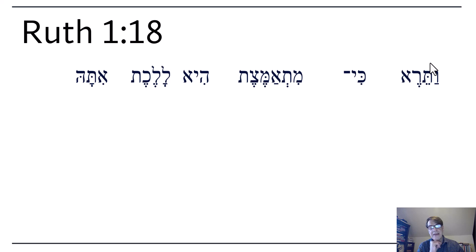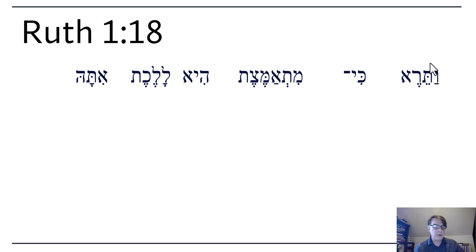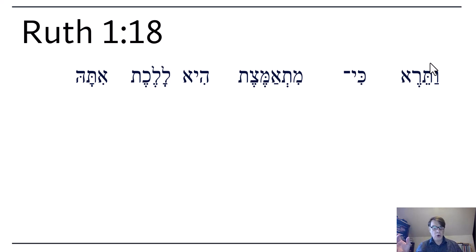I'm guessing it is third feminine singular, and that the subject is probably Naomi. Naomi went down with her husband to Moab; her husband died, her sons got married, and then they died. She's going back to Bethlehem, and Naomi and Orpah go back a little bit, then she says, 'Go home, I'm not going to have any more children, go back and marry in Moab.' Orpah did, but Ruth wouldn't. Ruth has refused to go back — 'whither thou goest, I will go' — she's going with Naomi back to Israel and Bethlehem. So, 'and she.'